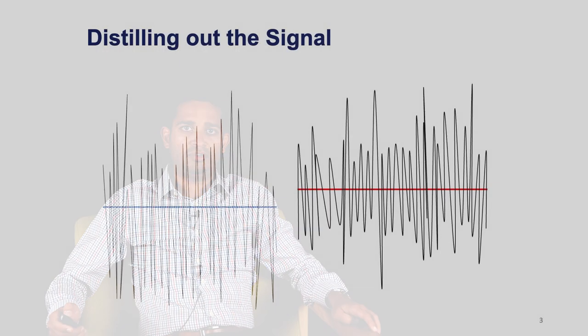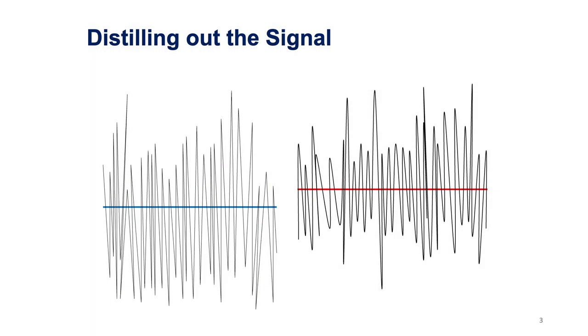The goal of sample size estimation is to distill the signal out of the noise, where the noise is the variation and the signal could be the treatment effect. On this figure, you'll see on the left-hand side the signal for the blue group, with the noise being the black lines, and on the right is the signal for the red group, with the noise being the black lines. Our goal is to get enough patients so that we can see this signal in the background of the noise.